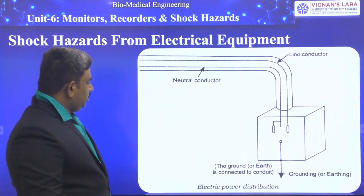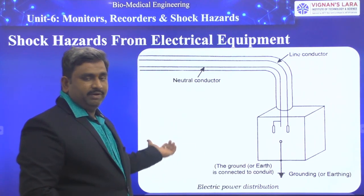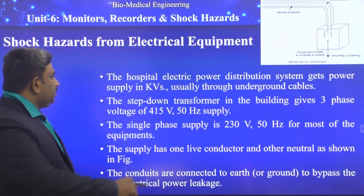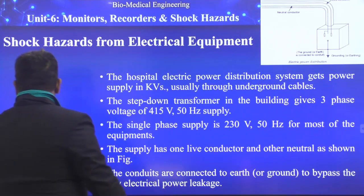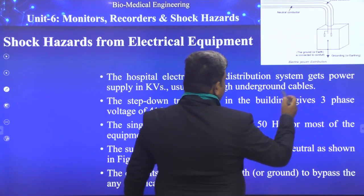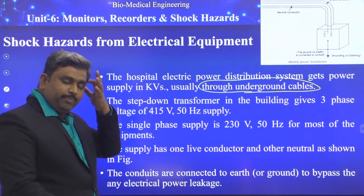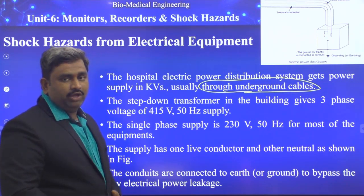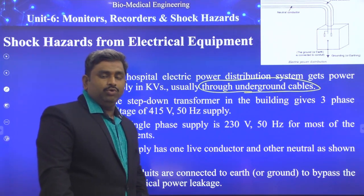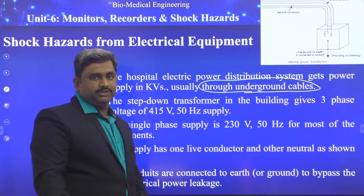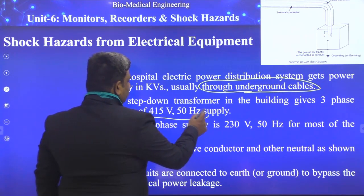This is the hospital electrical power distribution system transformer which is connected to the ground. The hospital electric power distribution system gets power in kilovolts usually through underground cables. These underground cables are provided with very high safety parameters. If the underground cables are not planned properly, there may be a chance of electrical accidents. We also have to ensure these cables are not affected by moisture or humidity.